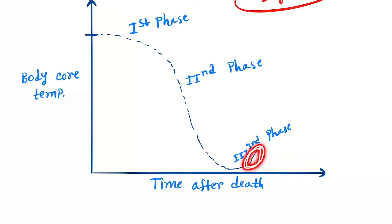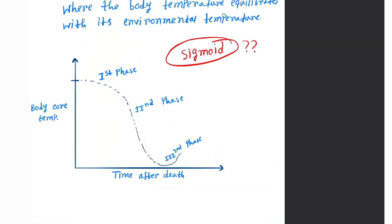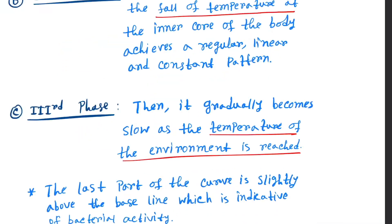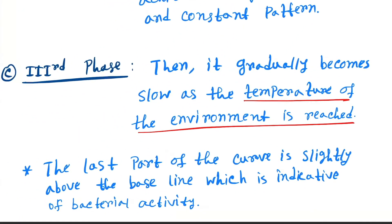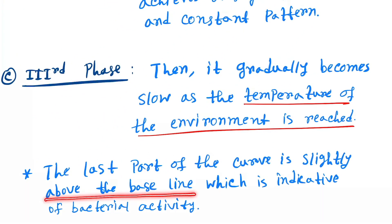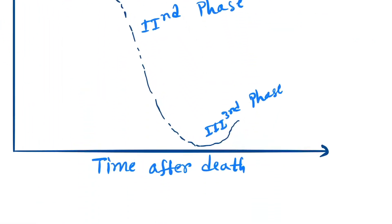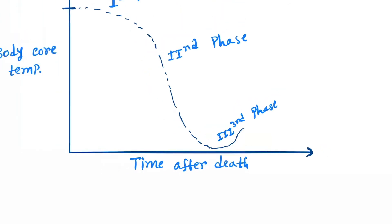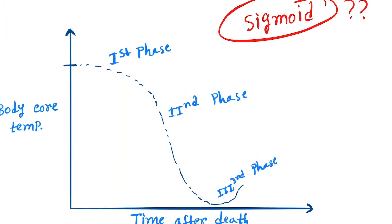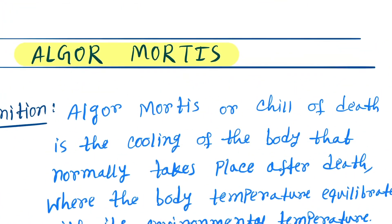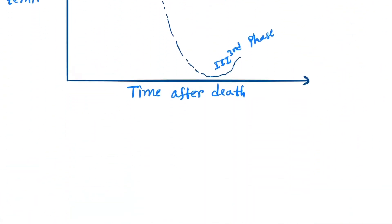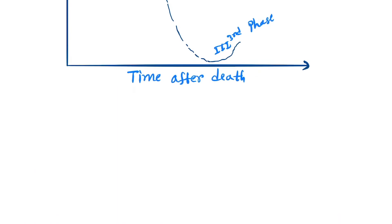There is an extra part to note: the last part of the curve is slightly above the baseline. This indicates bacterial activity — due to bacterial activity, the body temperature increases slightly. This explains the sigmoid-shaped curve of algor mortis.